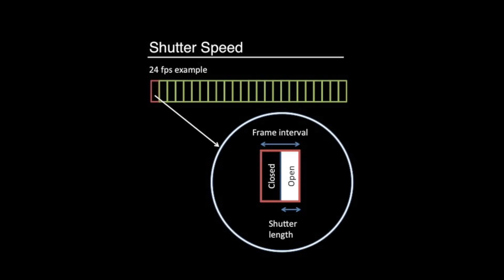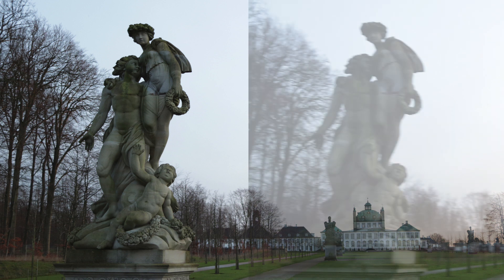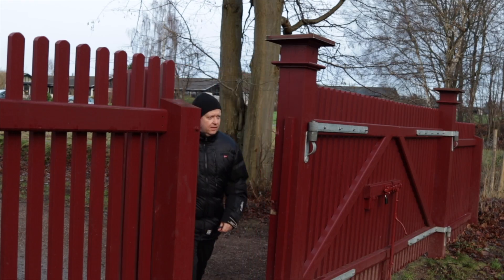The frame rate does not take into account the amount of light each frame is exposed to. Shutter speed is the duration each individual frame is exposed to light. With a higher shutter speed, the image will stay crisp and sharp. With a lower shutter speed, we start to introduce blur, because the shutter stays open longer and we are not able to fully freeze the frame. This phenomenon is called motion blur and it is quite natural to the eye.